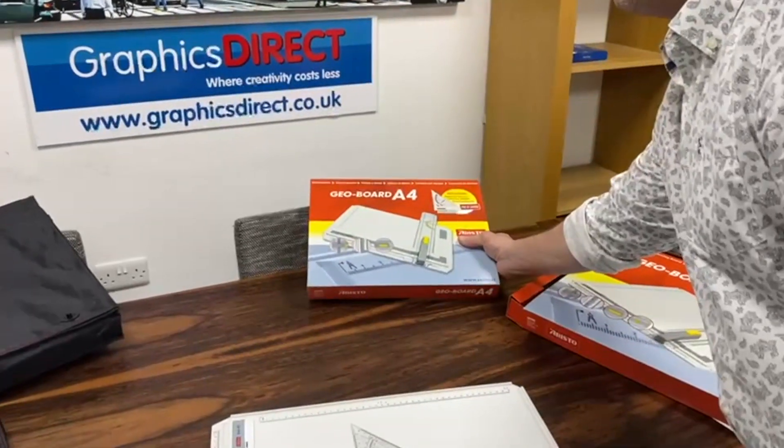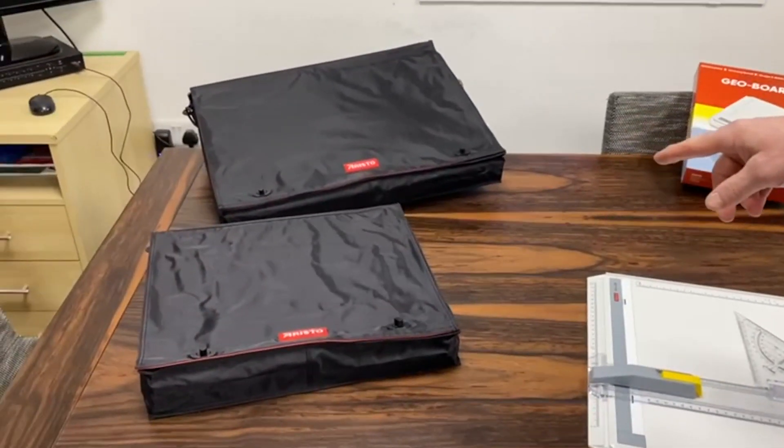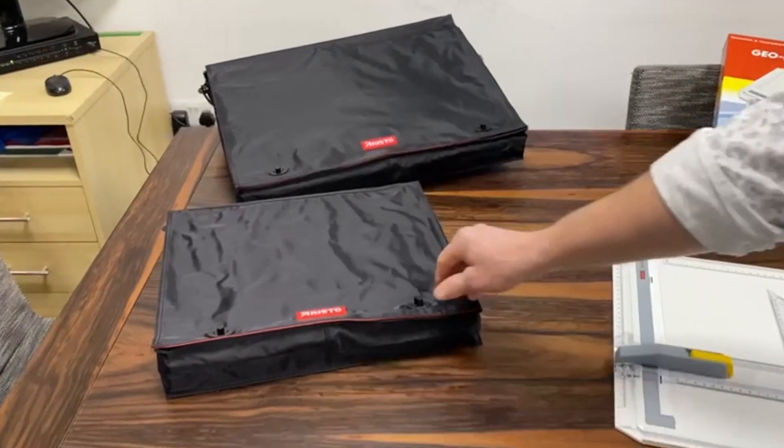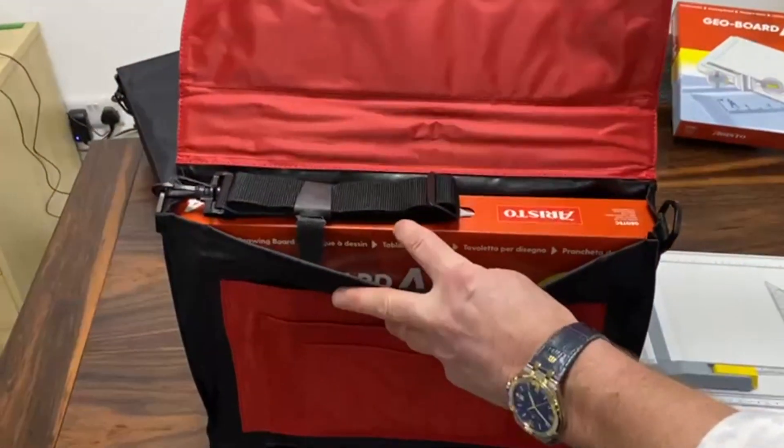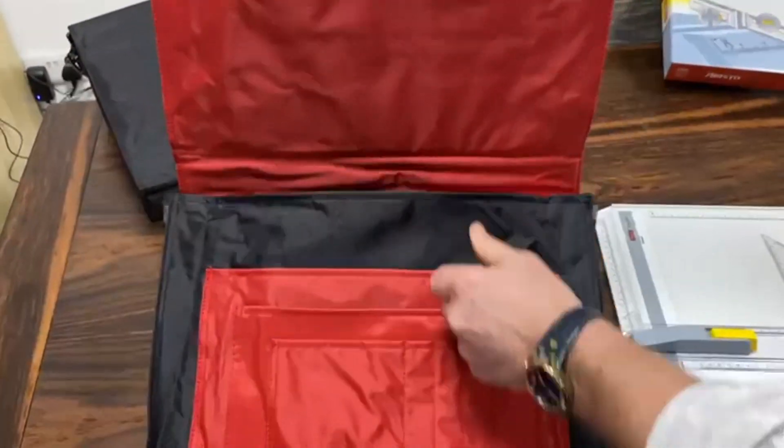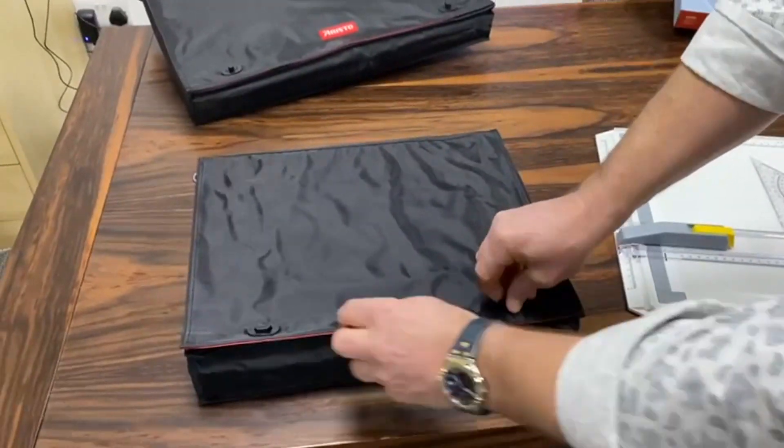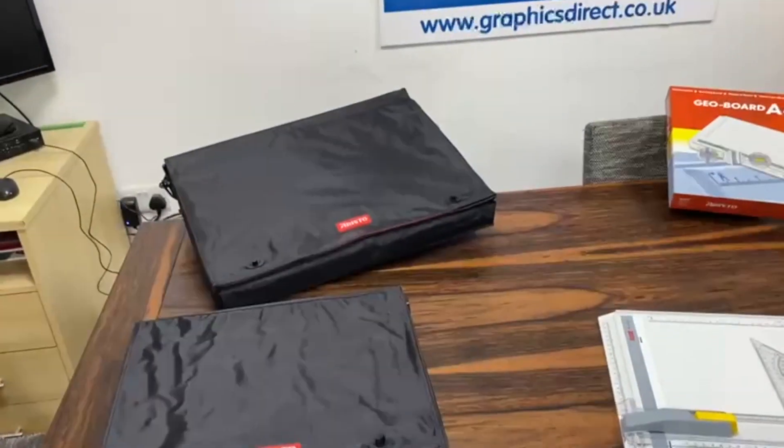This also comes with an optional case, so you can buy the board with a case which includes a shoulder strap as a nice, neat, waterproof and showerproof way to carry your board - available for the A3 version as well.